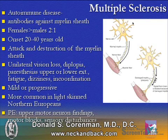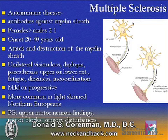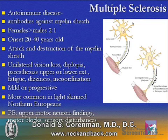Multiple sclerosis is an autoimmune disease in which the body produces antibodies against the myelin sheath. It's noted to be greater in females than males in a 2-to-1 ratio, and onset typically is 20 to 40 years of age. The actual problem is attack and destruction of the myelin sheath, creating a conduction block. Common symptoms are unilateral vision loss, double vision or diplopia, paresthesias of the upper or lower extremities, fatigue, dizziness, and incoordination. The type of multiple sclerosis can be mild or progressive, and it is interestingly found more commonly in light-skinned northern Europeans. Physical exam will note upper motor neuron findings, such as motor blocks and sensory disturbances.